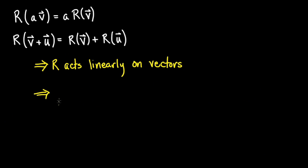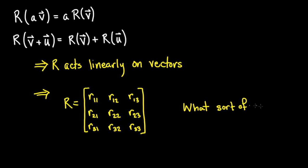And by definition, linear operations can be represented by matrices. But what does a rotation matrix look like?